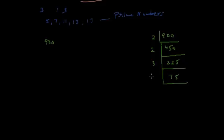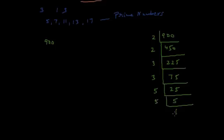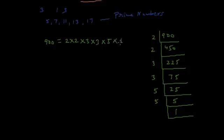We divide 75 by 3, and we get 25. Factorizing 25 further, we get 5, and continuing until we reach 1. So 900 can be written as 2 multiplied by 2 multiplied by 3 multiplied by 3 multiplied by 5 multiplied by 5.